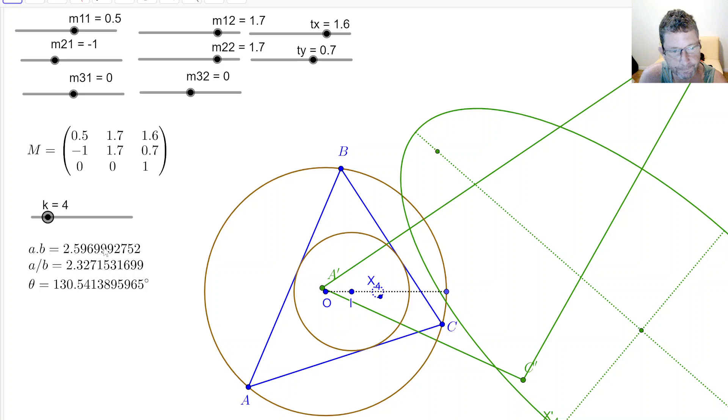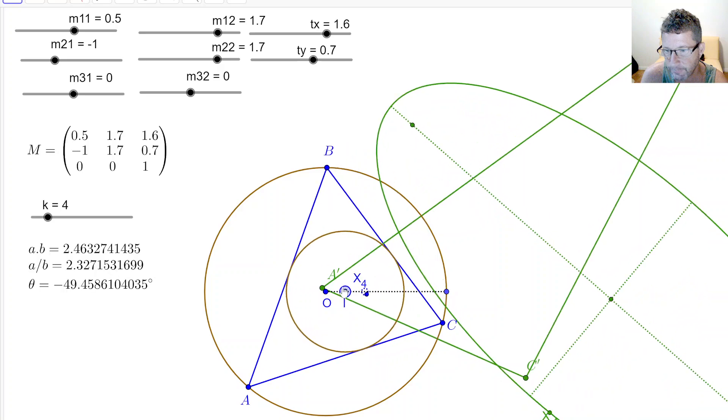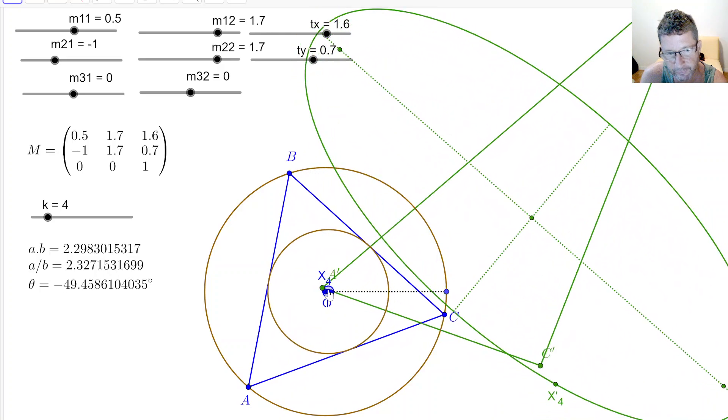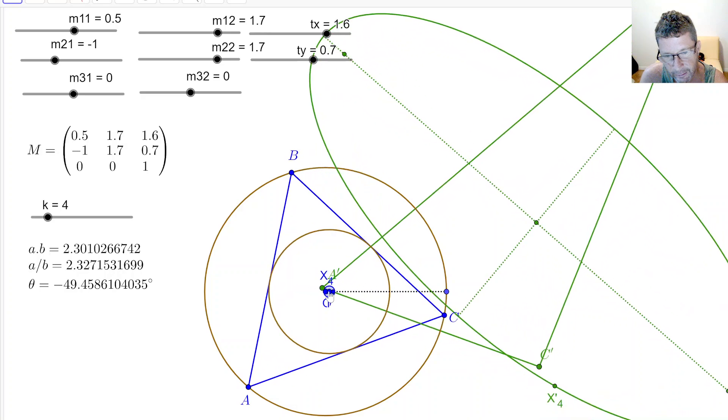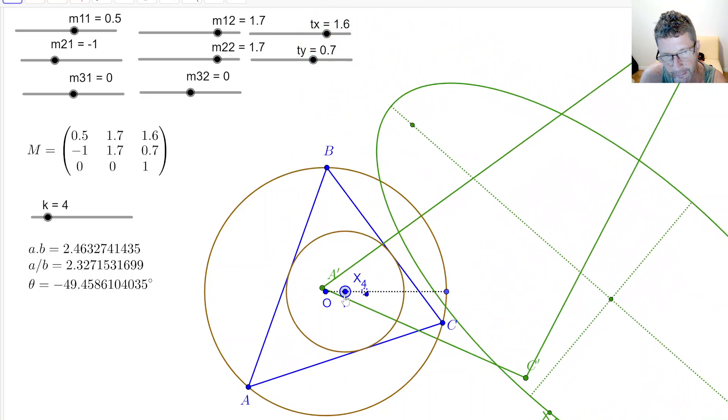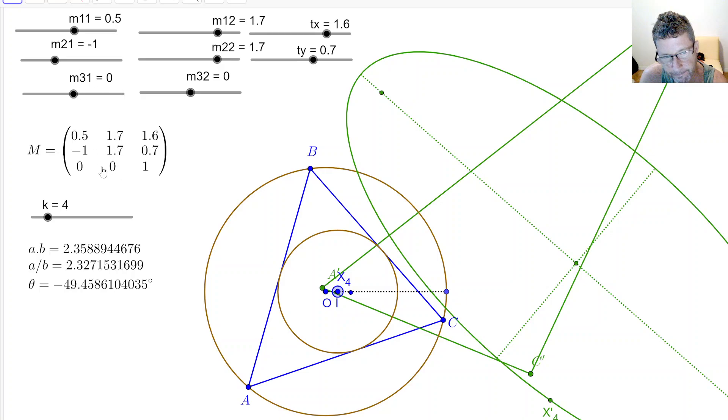Now how about x4? I am in the affinity case. You can see x4 here is this big ellipse, and if you look on the left, it's conserving, like x2, the eccentricity and the orientation on an affinity.